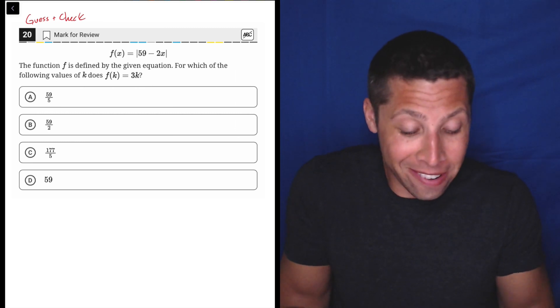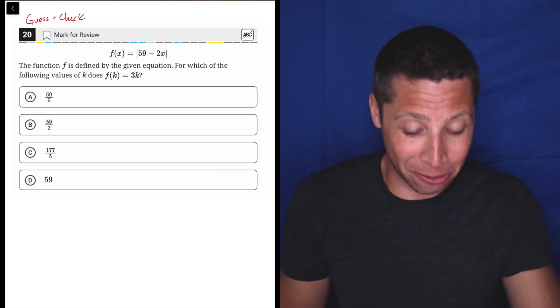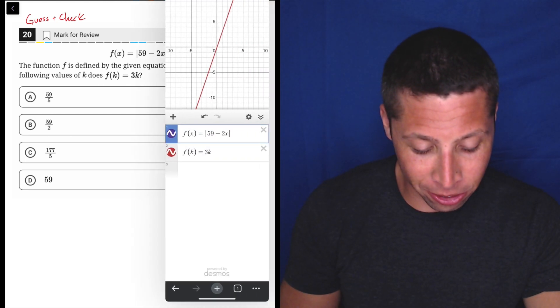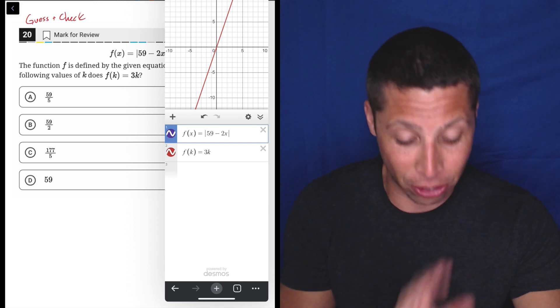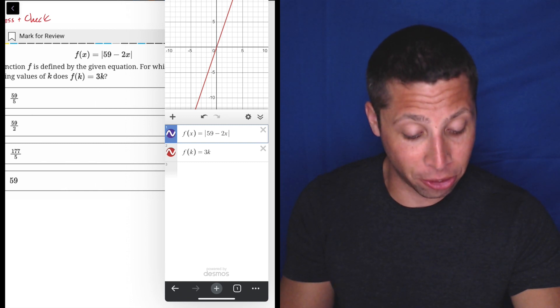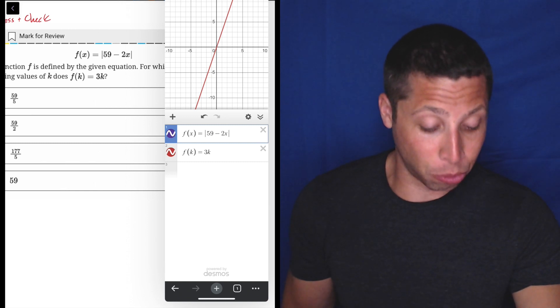We also have the ability to kind of play around with Desmos because it's a really powerful calculator. So here's what happens if you enter the two equations that they give us, just literally as is. F of X equals the absolute value of 59 minus 2X and F of K equals 3K.